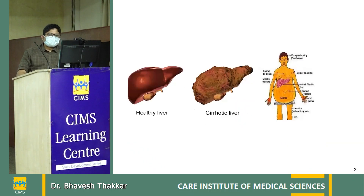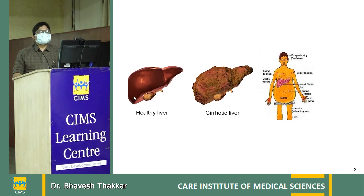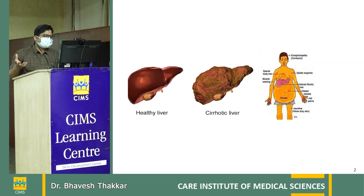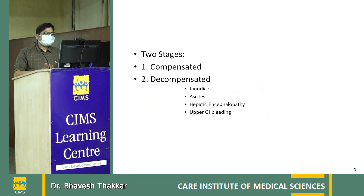Nursing care in cirrhosis patients: patients with cirrhosis typically present with large abdominal fluid collection and jaundice. Cirrhosis is a fibrosis of the liver — it is a permanent, irreversible, progressive damage to the liver. The functional capacity is reduced; a cirrhotic liver is nodular and hard compared to a smooth, normal liver. Whenever cirrhotic liver is present, the patient will develop complications.